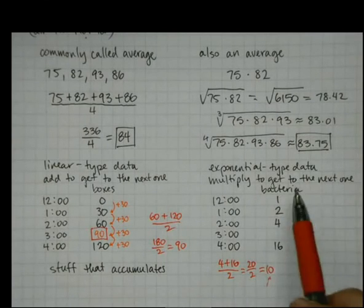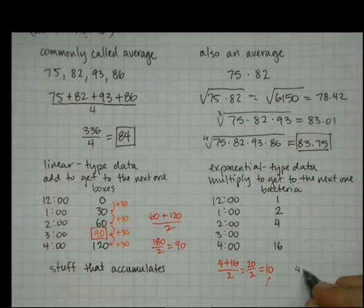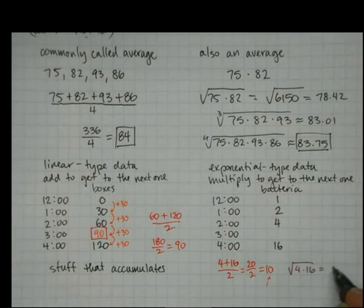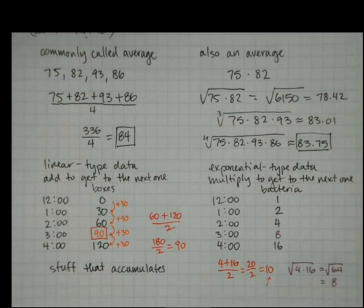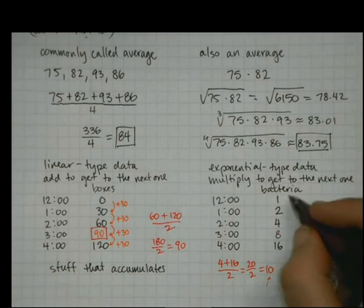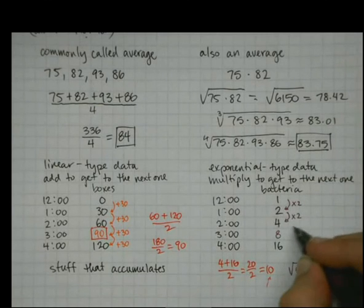Try it with the geometric mean. The geometric mean in this case, we have 4 and 16. And we want to square root the 2. 4 times 16 is 64. Square root that and we've got 8. 8 is the number that goes here. Because if you saw the pattern, 1 times 2 is 2. 2 times 2 is 4. 4 times 2 is 8. 8 times 2 is 16.